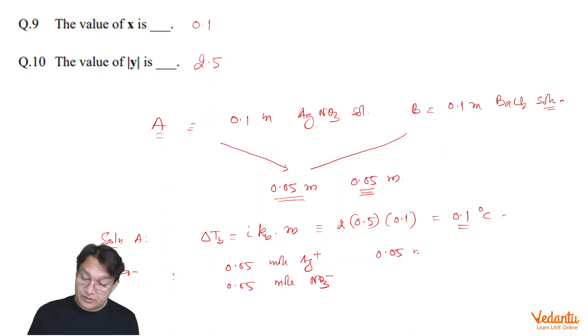0.05 mol of Ba2 plus ion, and 0.05 mol into 2 of Cl minus ion.